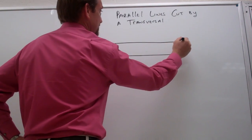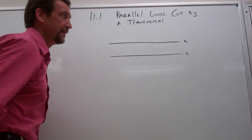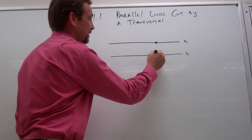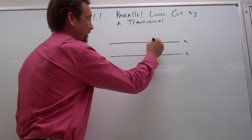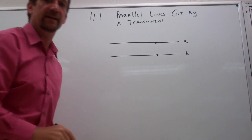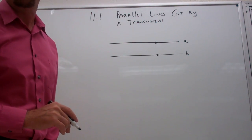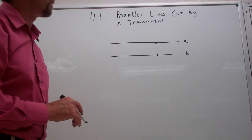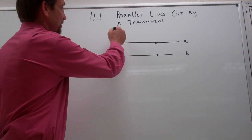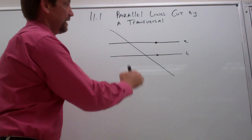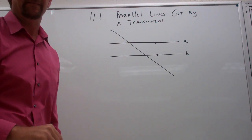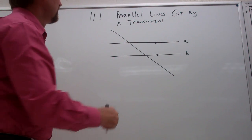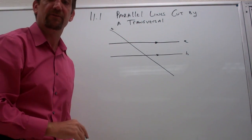Let's call this guy line A, this guy line B. And if we draw a little triangle on here like this, this indicates that those two lines are parallel. So I'm telling you that lines A and B are parallel. Now, a transversal is a line that intersects two lines in the same plane at two different points. So if I were to take a line like this and intersect line A and B, this is now a transversal — we'll call that line T for transversal.